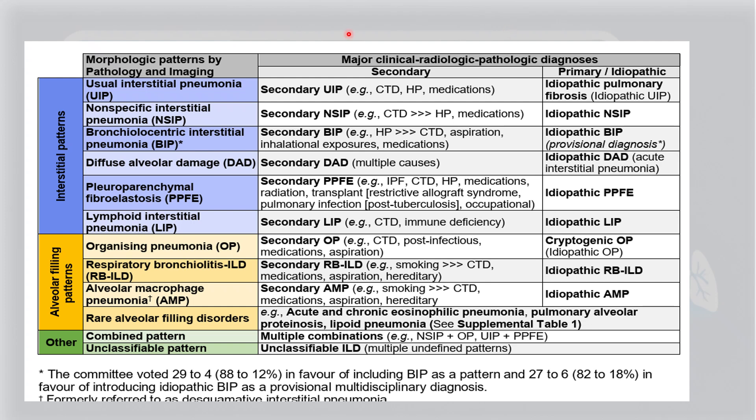The classification is no longer limited to idiopathic IPs. Secondary causes are also included — which include HP, CTD, and drug-induced ILD — giving a single unified classification. Some diseases like RB-ILD have idiopathic causes, and even IPF — idiopathic pulmonary fibrosis — can have some underlying causes. To clarify all this, they have divided it into secondary and primary.